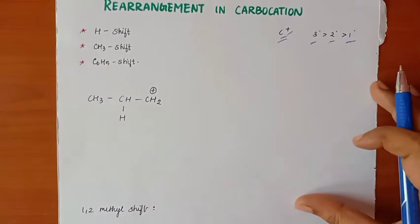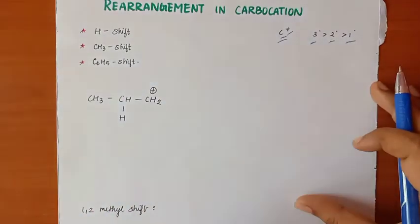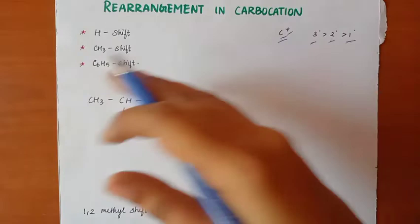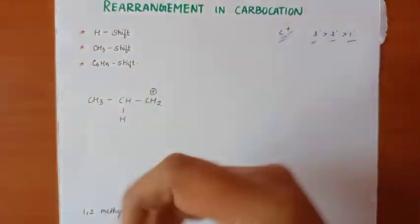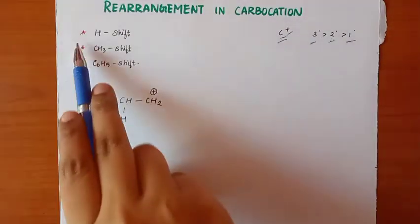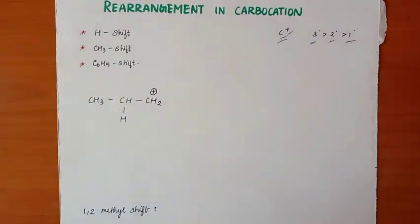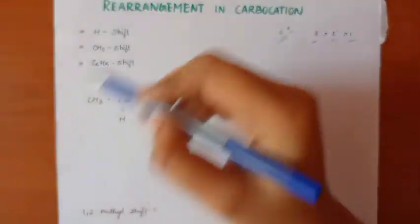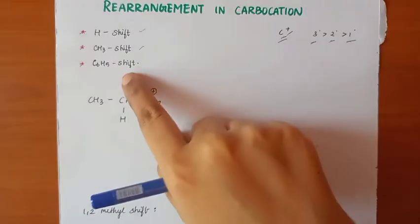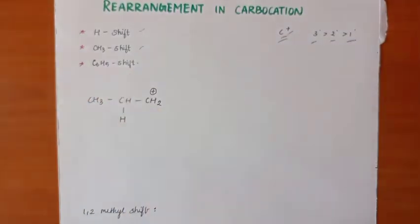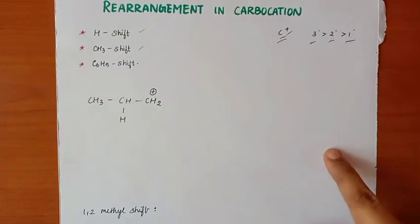The third process is the shift. There are three types of shifts: the hydride shift, the methyl shift, and the phenyl shift. In this video, we will talk about the hydride shift and the methyl shift in the hydrocarbons chapter.